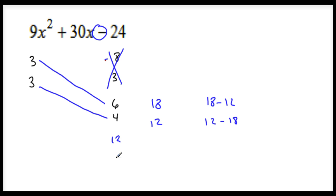12 and 2. 3 times 12, 36. 3 times 2, 6. Can 36 minus 6, or 6 minus 36, give me 30? Yes.